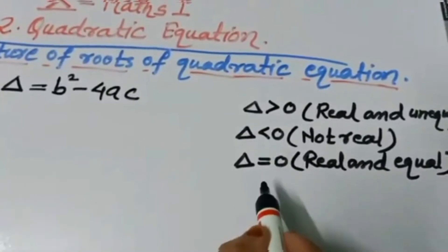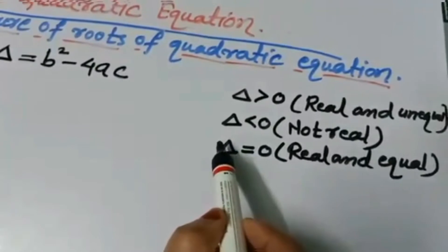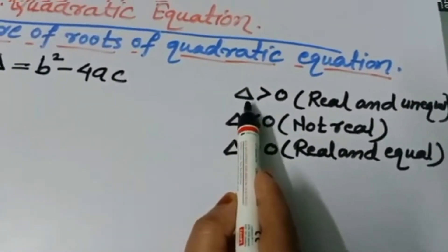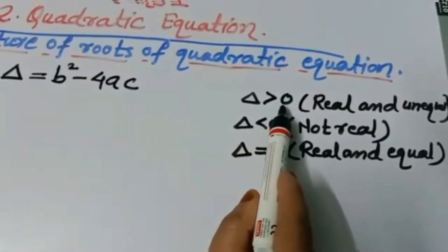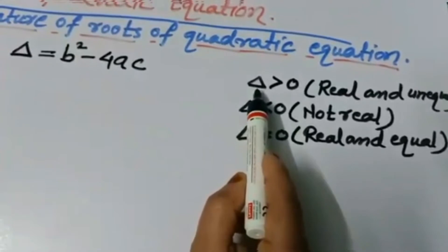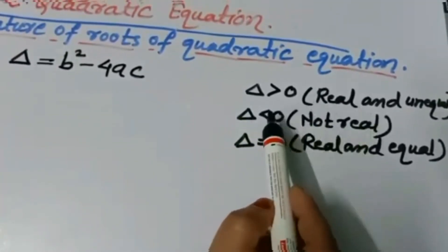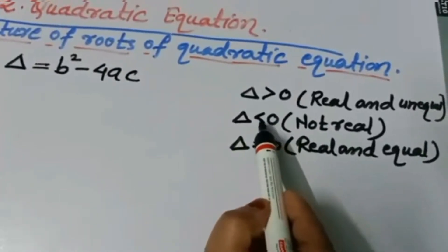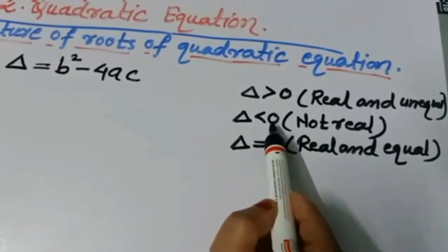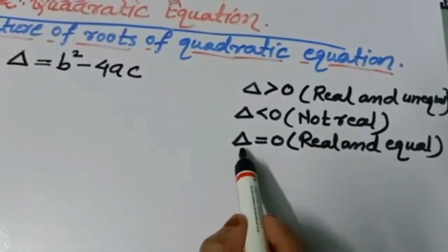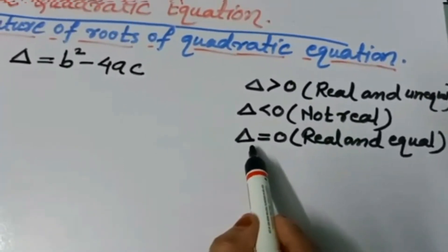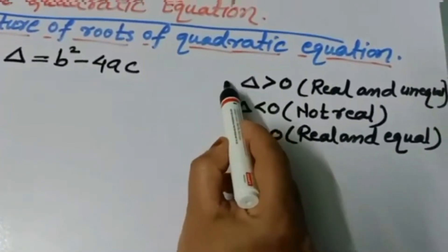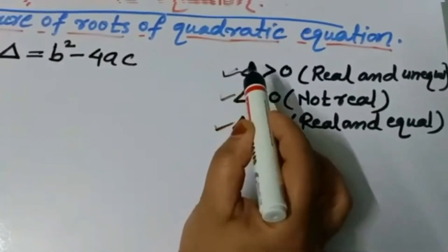So these 3 conditions we have to keep in mind to determine the nature of the roots of any quadratic equation. If the value of delta is a positive number, the nature of the root is real and unequal. If the value of delta is negative, the nature of the root is not real. And if the value of discriminant is 0, then the nature of the root is real and equal.